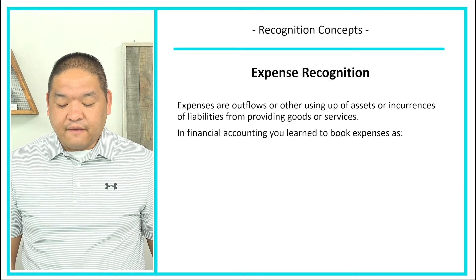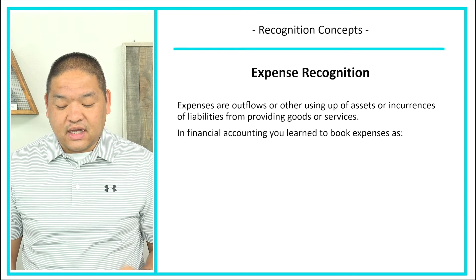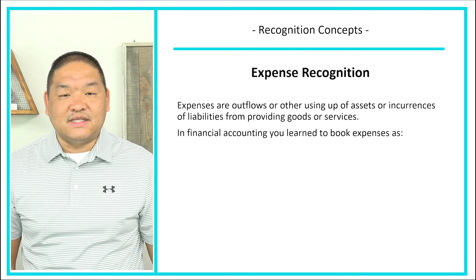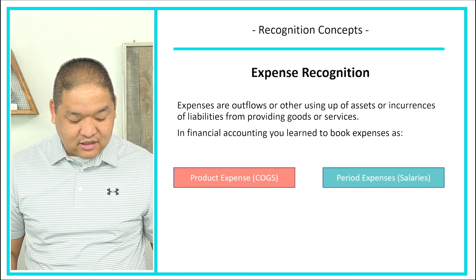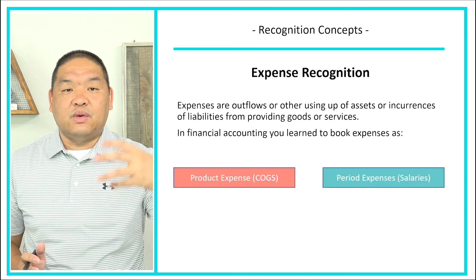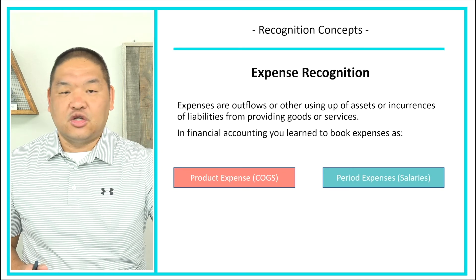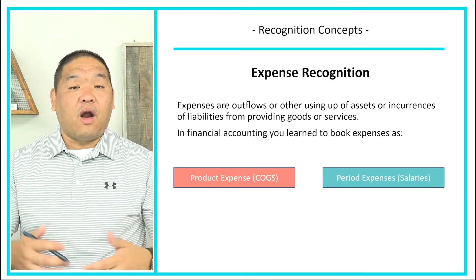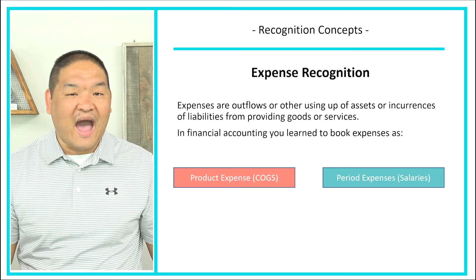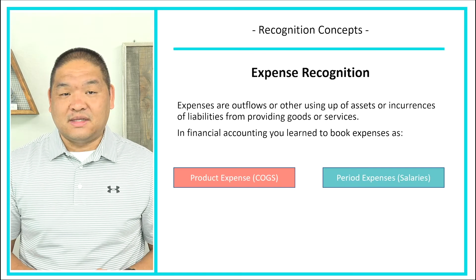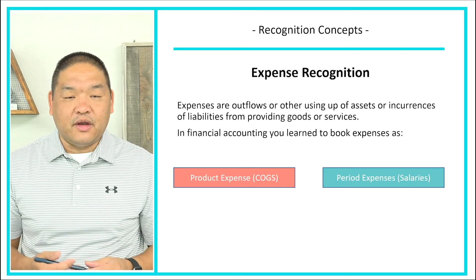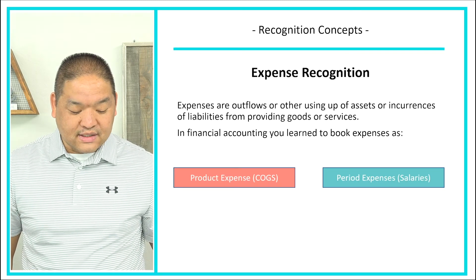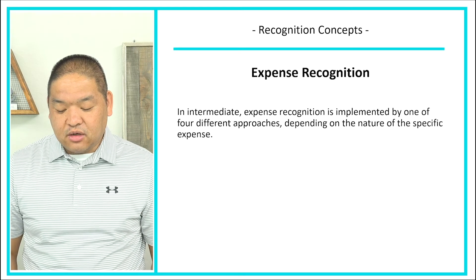Along with revenues, we have expenses. Expenses are outflows or other using-up of assets or incurrences of liabilities from providing goods or services. In financial accounting, you learn to book expenses as either product expenses or period expenses. Product expenses are costs associated directly with a product you intend to sell. Period costs are not directly associated with a product but are required to operate during the period — examples include advertising, janitorial expenses, and headquarters office lease.